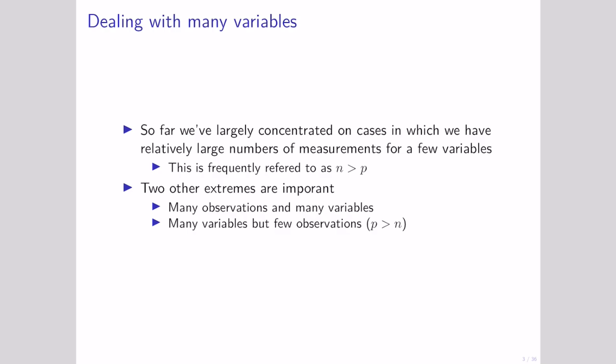But there are two other extremes that are really important, especially for biological data where we can make widespread global measurements nowadays. One is when we have many observations and many variables. Another is when we have many variables but few observations, where p is greater than n. The techniques we're going to talk about in this lesson are going to help with all of these cases, but will be especially helpful for those bottom two.